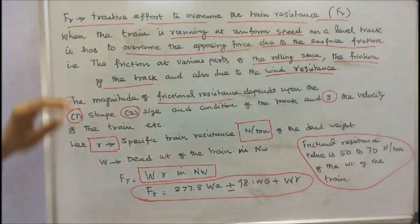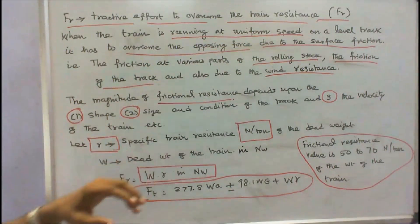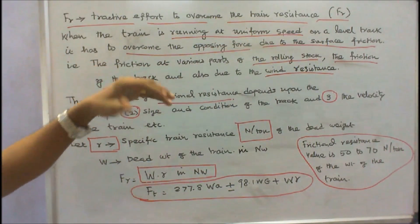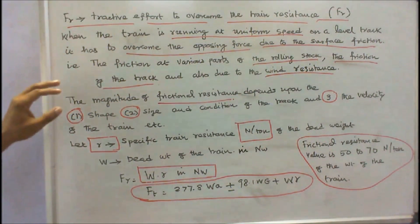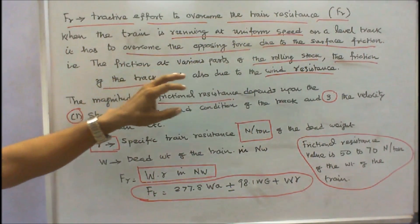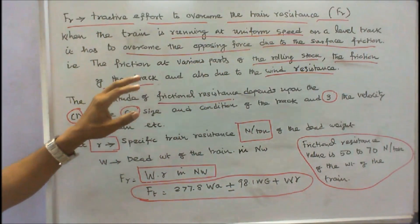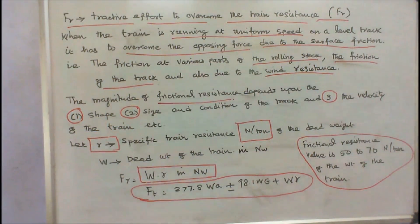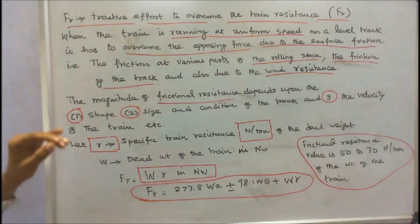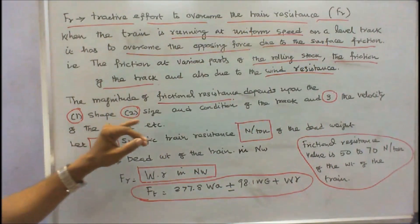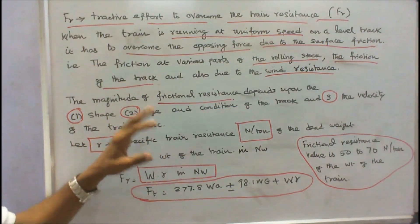When the train is running at uniform speed on a level track, it has to overcome the opposing force due to the surface friction, that is the friction at various parts of the rolling stock, the friction of the track and also due to the wind resistance. The magnitude of frictional resistance depends upon the following: number 1, shape; number 2, size and condition of the track; number 3, the velocity of the train, etc.